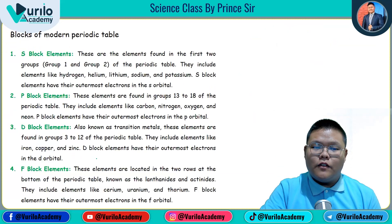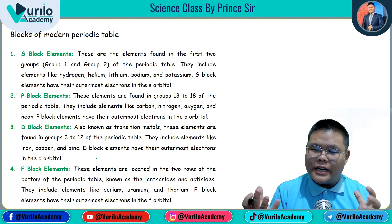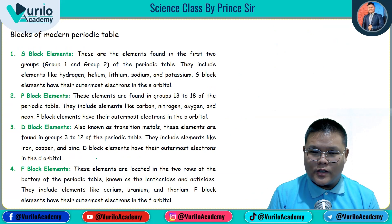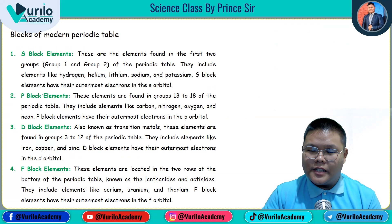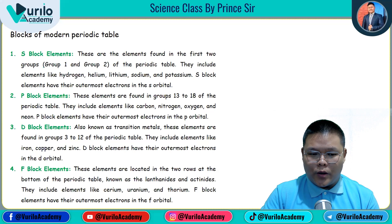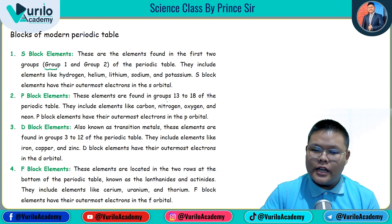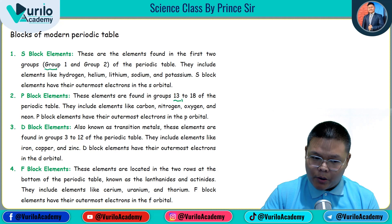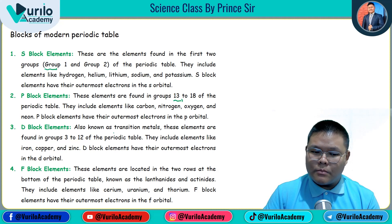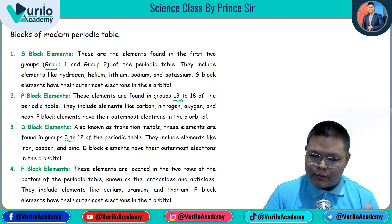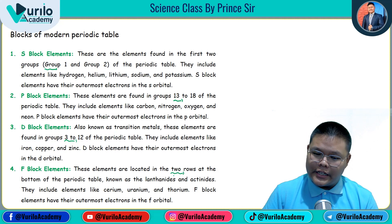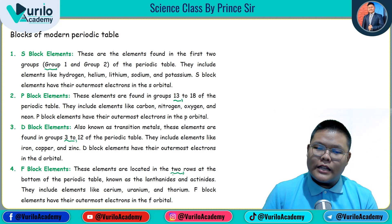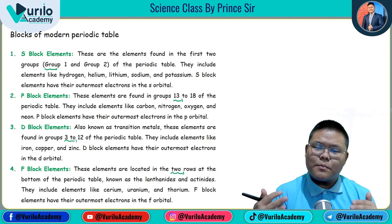I hope the concept is clear. Now let's talk a little about the blocks of the modern periodic table. These are simple things — S block, P block, D block, and F block elements. These are generally divided on the basis of their sub-shell. Group 1 and 2 are generally S block elements. Groups 13 to 18 are in the P block. D block contains transition metals in groups 3 to 12. F block elements are located in the two rows at the bottom — lanthanides and actinides.